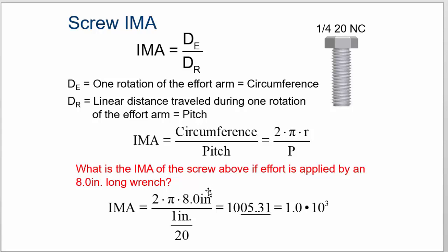Be careful, because remember, this is the radius. What is the IMA of the screw above if effort is applied by an 8-inch wrench? So you take the wrench, which is the radius, plug it into your equation, 2 times π times 8 divided by 1 over 20.